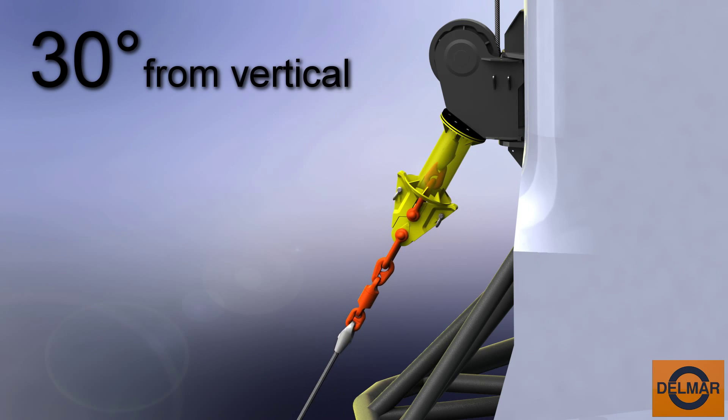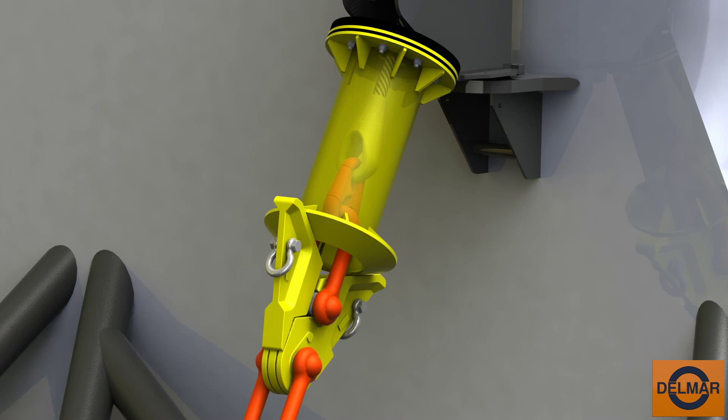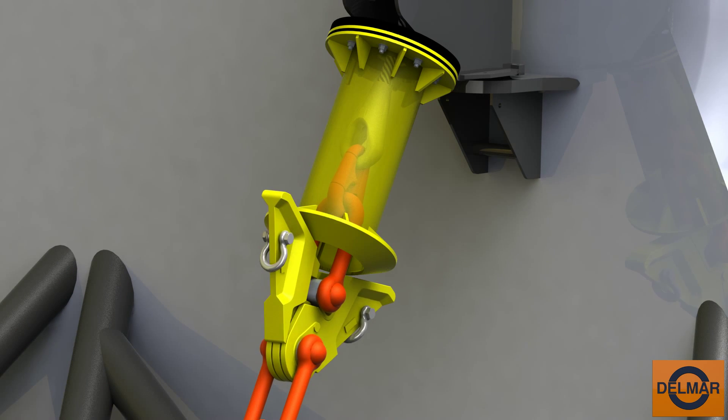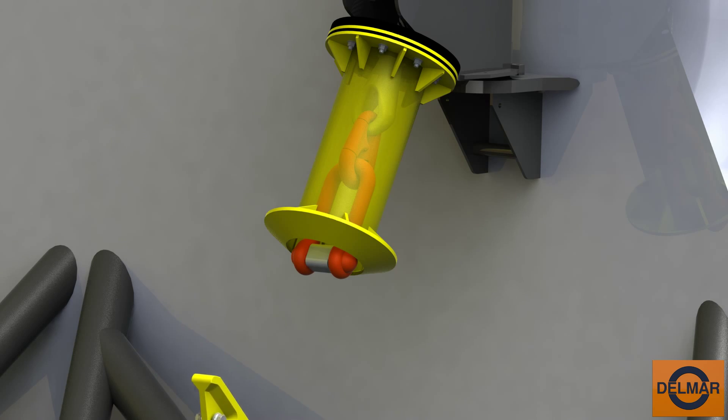The trigger sleeve contacts the fair lead structure, transferring the line load to the Delmar Quick Release. The Delmar Quick Release is pushed open, shearing the securing pin and releasing the shackle.